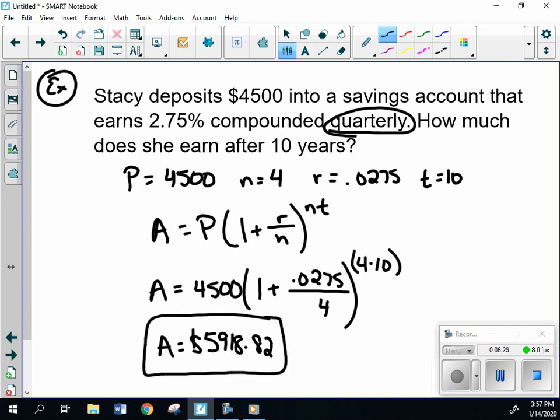And we would get $5,918.82. So after 10 years, there's a good gain there. And that's just because of the rate that the money is compounded and the number of times that it's compounded.